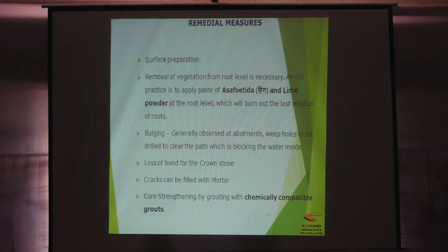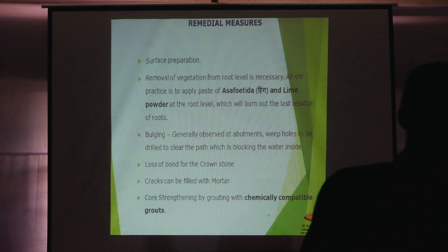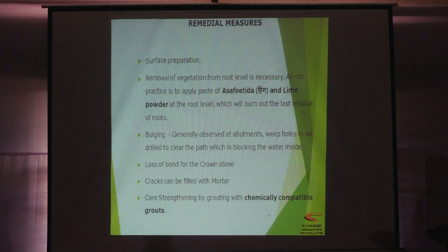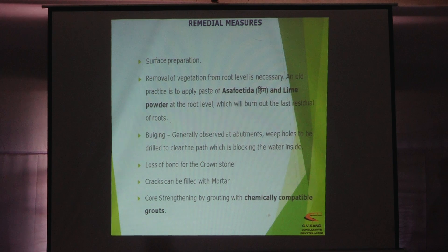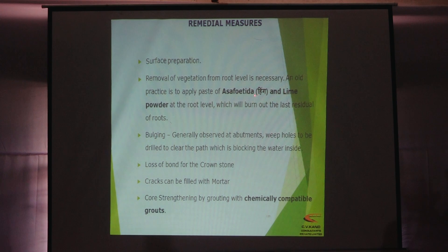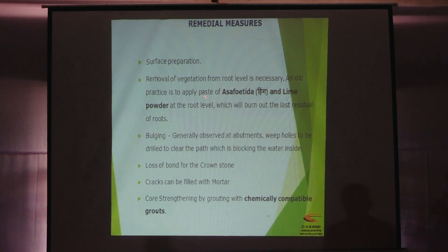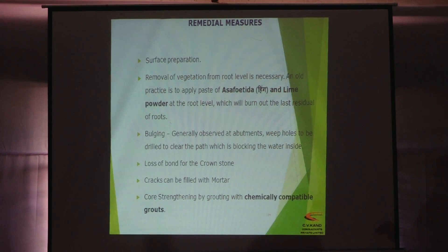There are certain methods for removing the vegetation on the bridge. We just cut those small plants on the bridge, but the roots remain and it sprouts again. There is one method — though not written anywhere — if we add Hing, which is asafoetida, and lime powder mixed together and put that on the roots, the roots get burnt inside the component.